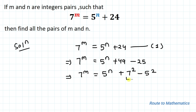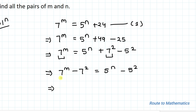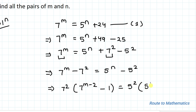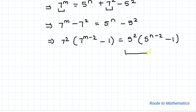In the next step, let's take the same base to one side. So we are getting 7m minus 7 squared equals to 5 to the power n minus 5 squared. This implies: now I will take 7 squared common, so 7 squared multiplied with 7 to the power m minus 2 minus 1 equals to 5 squared multiplied with 5 to the power n minus 2 minus 1. Let's take it as equation 2.